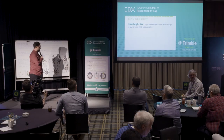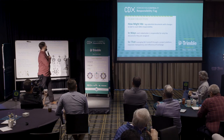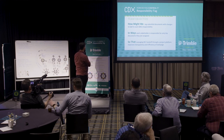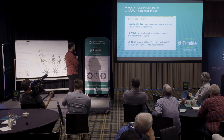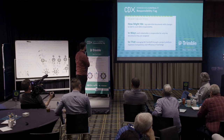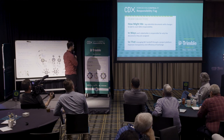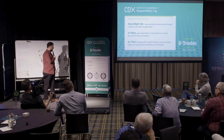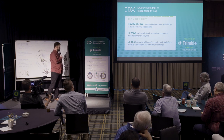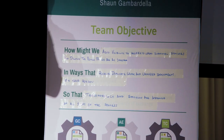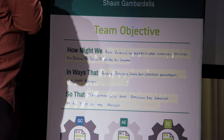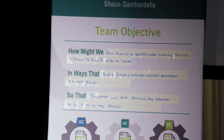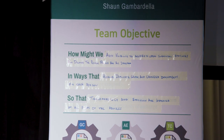We wordsmithed our problem statement quite a bit. Originally: 'How might we tag submittal documents with changes to ball-in-court responsibility in ways each stakeholder is responsible for only the documents they are assigned, so that managing ball-in-court handoff through a project platform improves transparency and efficiency.' That evolved to: 'How might we add visibility to agreed-upon statuses and digitize the review process for all stakeholders in ways that reduce duplicate work and unneeded documents, so that transparency and efficiency are improved at all steps of the process.'